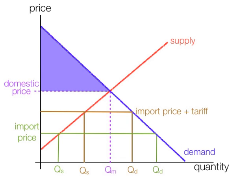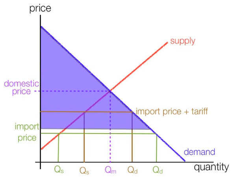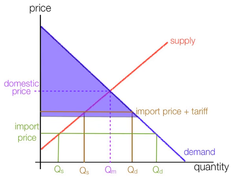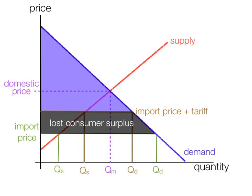Initially, this is consumer surplus. After imports, it grows dramatically because of the lower price. But the tariff causes some consumer surplus to be lost. This black trapezoid is lost consumer surplus because of the tariff.